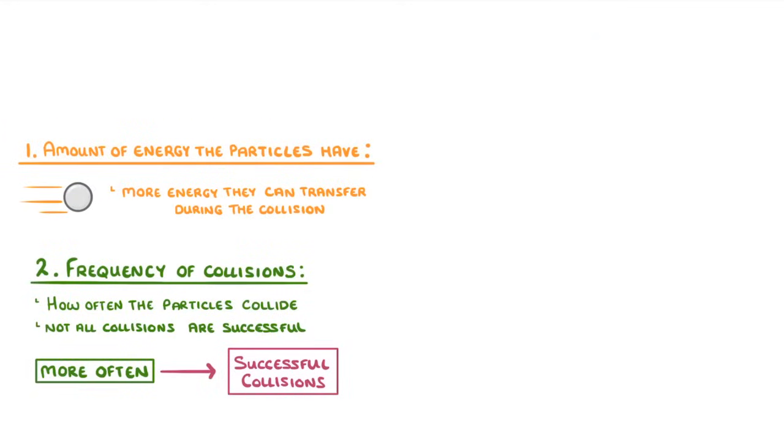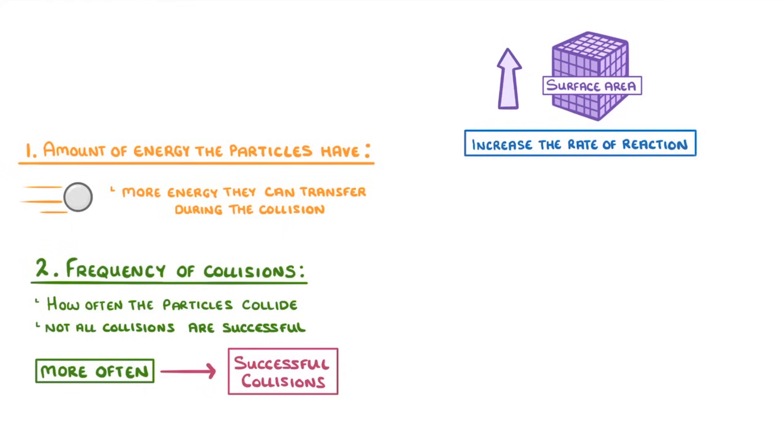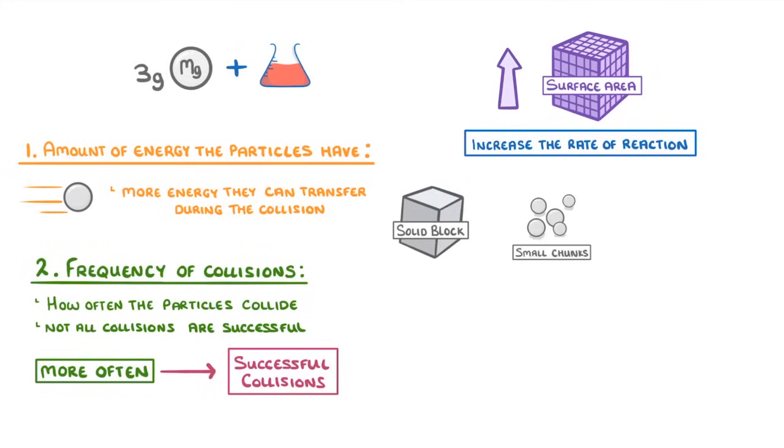Just like concentration and pressure, a higher surface area will also increase the rate of reaction. For example, if we wanted to react 3 grams of magnesium with an acid, we could use a solid block of magnesium, small chunks of magnesium, or powder.